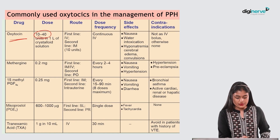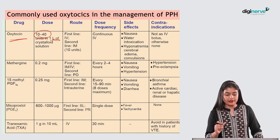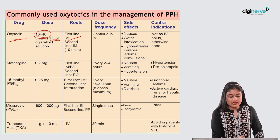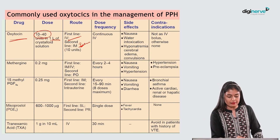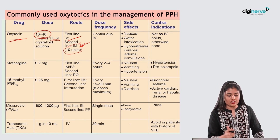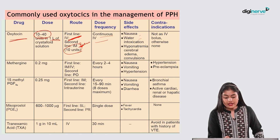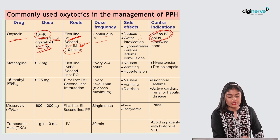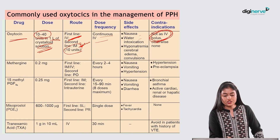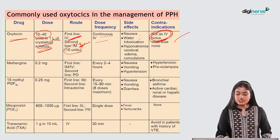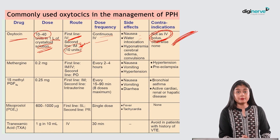Oxytocin dose is 10–40 international units in one liter of crystalloid for IV treatment. For prevention in AMTSL, 10 units IM can be given. As treatment, it must be given IV continuously — IV bolus is absolutely contraindicated. Always dilute in crystalloid before giving.